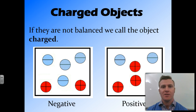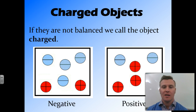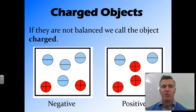On the left hand side we have an object that has four negative charges and two positive charges, so it is a negatively charged object because there are more negative charges. On the right hand side we have four positive particles and two negative particles, so we call this object positively charged.